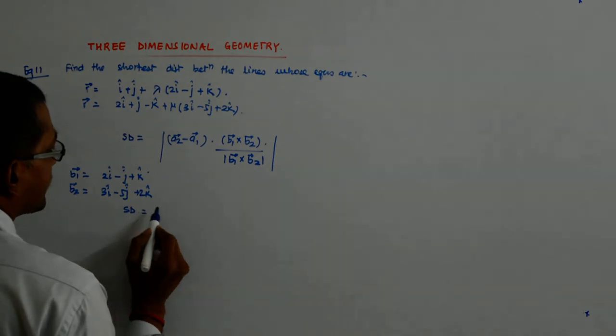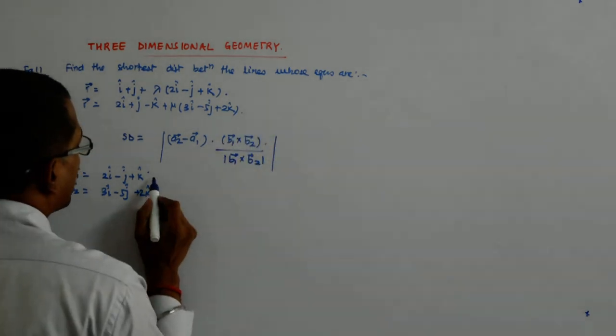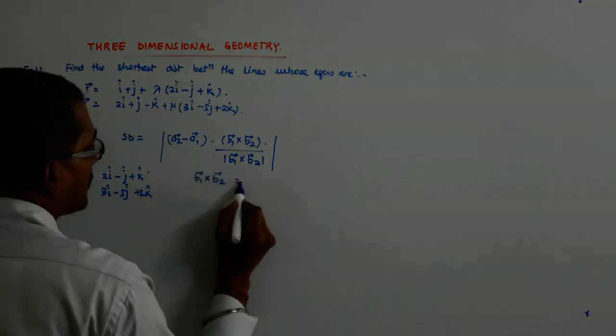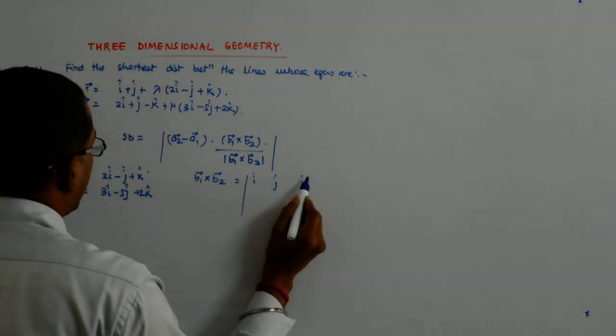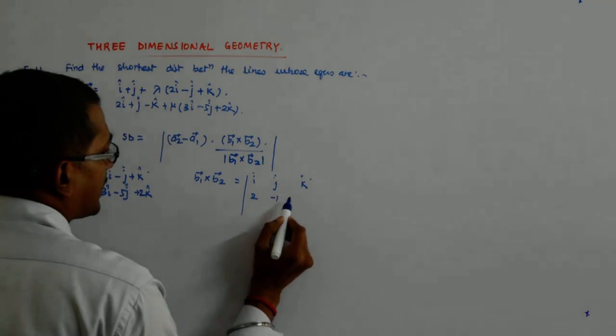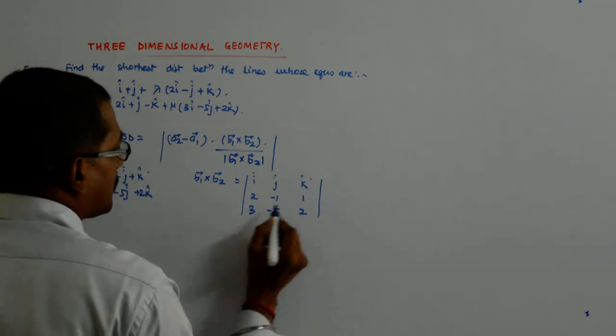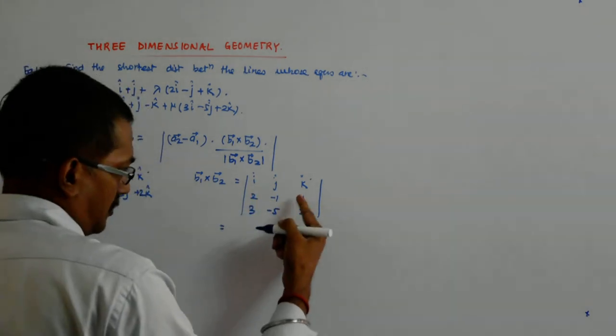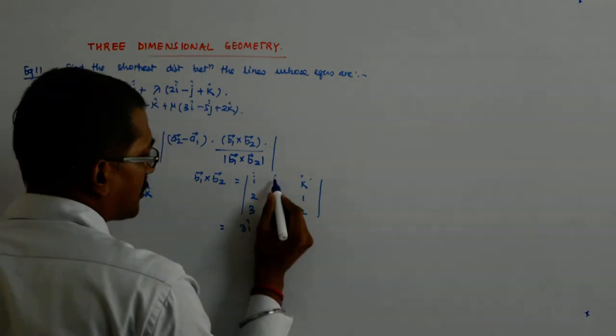So, the shortest distance. The first thing that we should do is find out B1 cross B2. So, what is B1 cross B2? That is nothing but i, j, k, 2, minus 1, 1, 3, minus 5, 2. Now, that gives me minus 2 minus minus 5, so that is plus 5. So, it is 3i cap. Is it not?